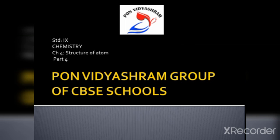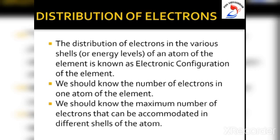The distribution of electrons, or what we call the electronic configuration of elements, refers to the arrangement of electrons in the various shells or energy levels of an atom. In other words, electronic configuration is the distribution of electrons in various shells or energy levels such as K shell, L shell, M shell, etc.